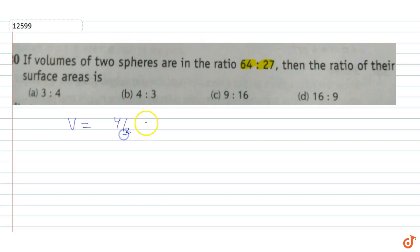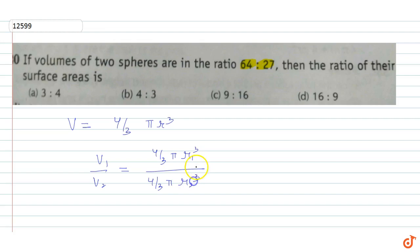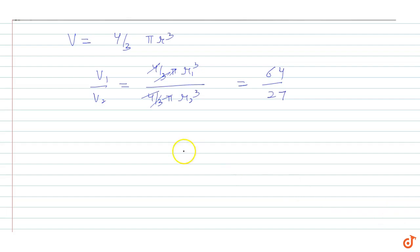For two spheres V1 and V2, the ratio of volume 1 to volume 2 equals (4/3 π r1³) / (4/3 π r2³). We can cancel 4/3 and π, and since the volume ratio is given as 64/27, we get r1³ / r2³ = 64/27.